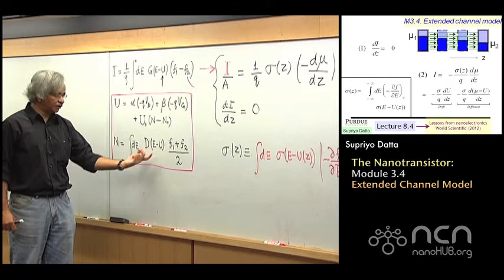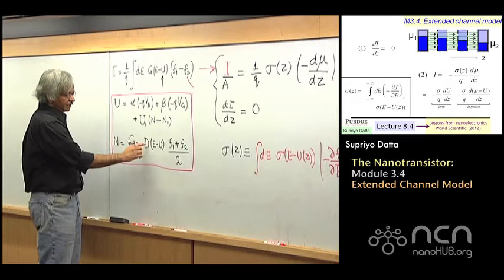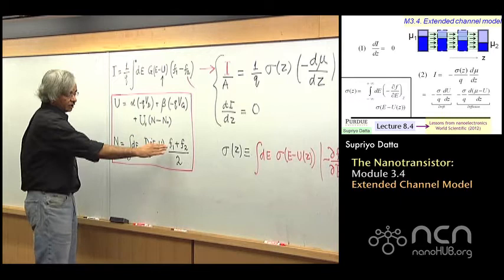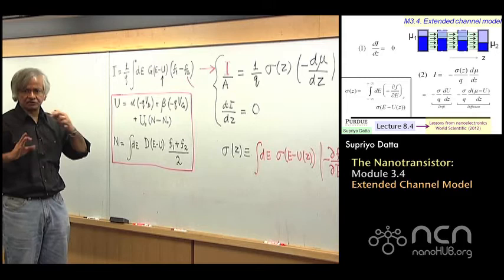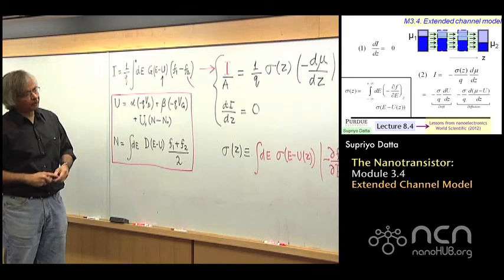Similarly, there would be a version of this which would tell you the electron density at any point Z and how it varies with Z. This D would be something changing with Z, just as the Fermi functions and distributions change with Z. So that is what you would have to do to analyze devices beyond the point-channel model, which is kind of beyond the scope of this course.